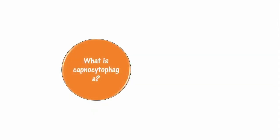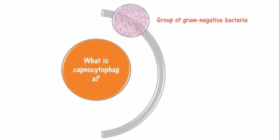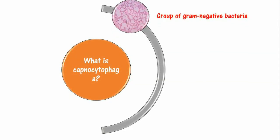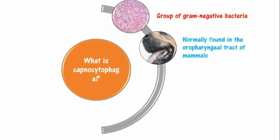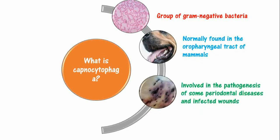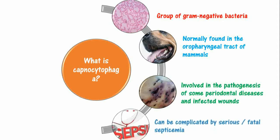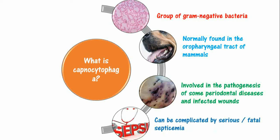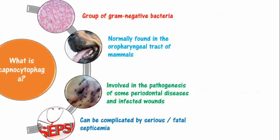What is Capnocytophaga? It is a group of gram-negative bacteria. They are normally found in the oropharyngeal tract of mammals. They are involved in the pathogenesis of some periodontal diseases and infected wounds, which can rarely complicate by septicemia with serious or fatal outcome.